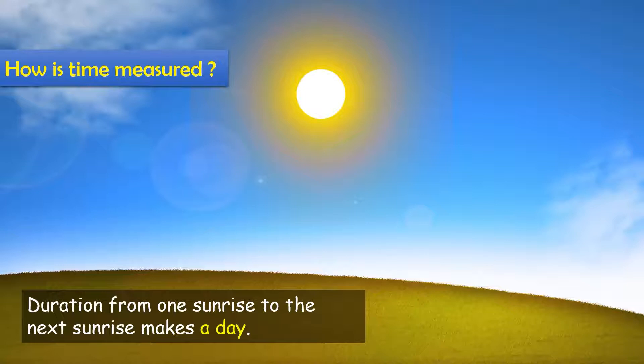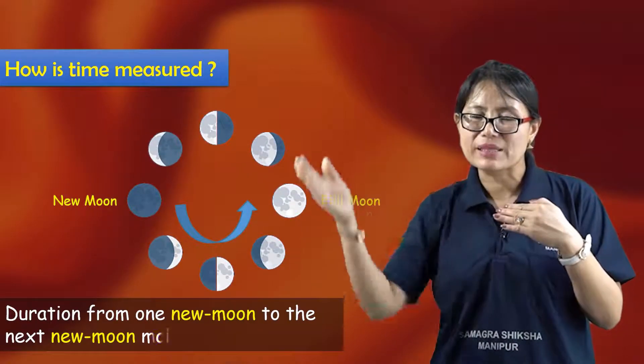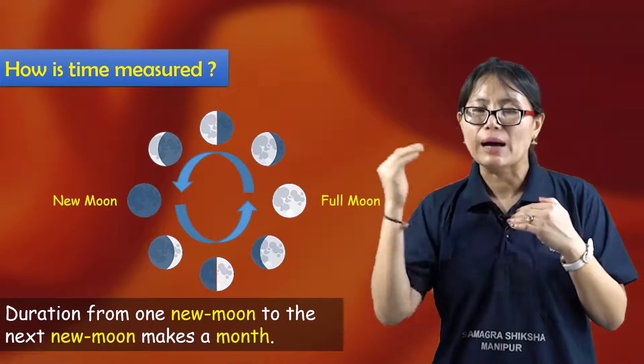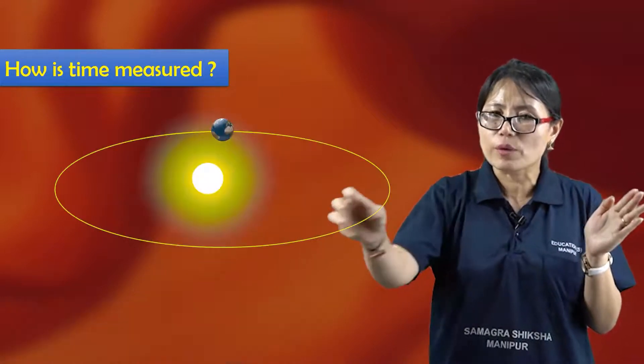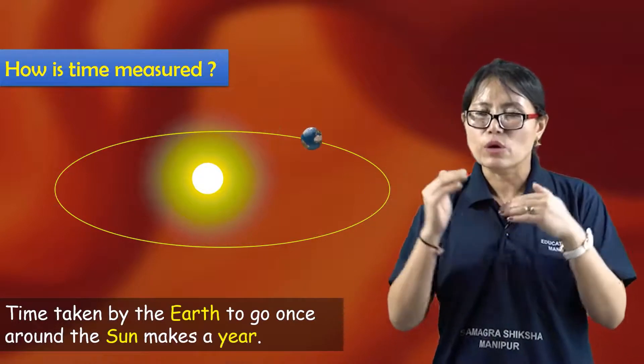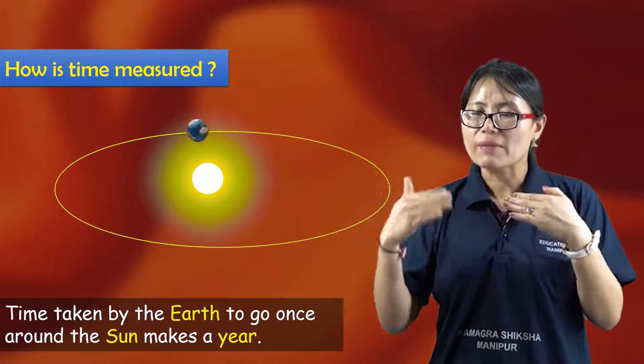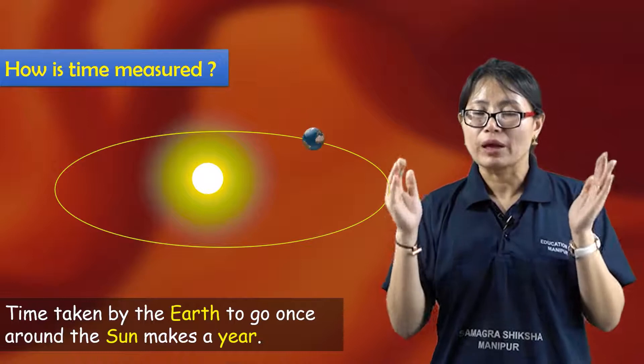The duration from one sunrise to the next sunrise is a day. Similarly, from one new moon to the next new moon is a month, and one complete revolution around the sun makes a year.